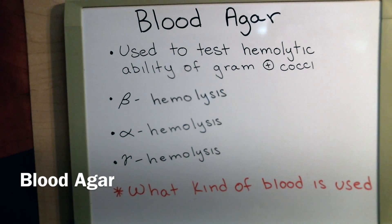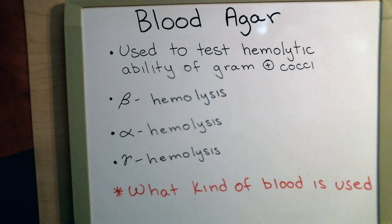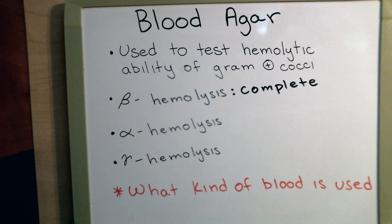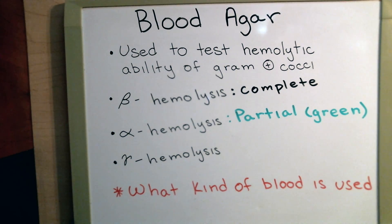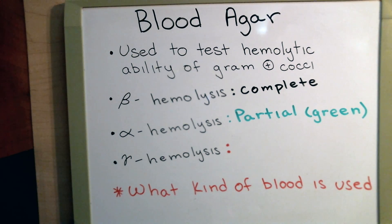Moving on to the blood agar plate, which is used to test the hemolytic ability of gram-positive cocci. We have three types: beta, alpha, and gamma. With beta hemolysis, that's the complete lysing of the red blood cells — when you hold the plate up, you can see clearly through it, it's very distinct, almost clear. Alpha hemolysis is partial hemolysis, evident by a green color. And gamma hemolysis is no hemolysis at all — you'll have growth on the plate but no clearing of the blood.